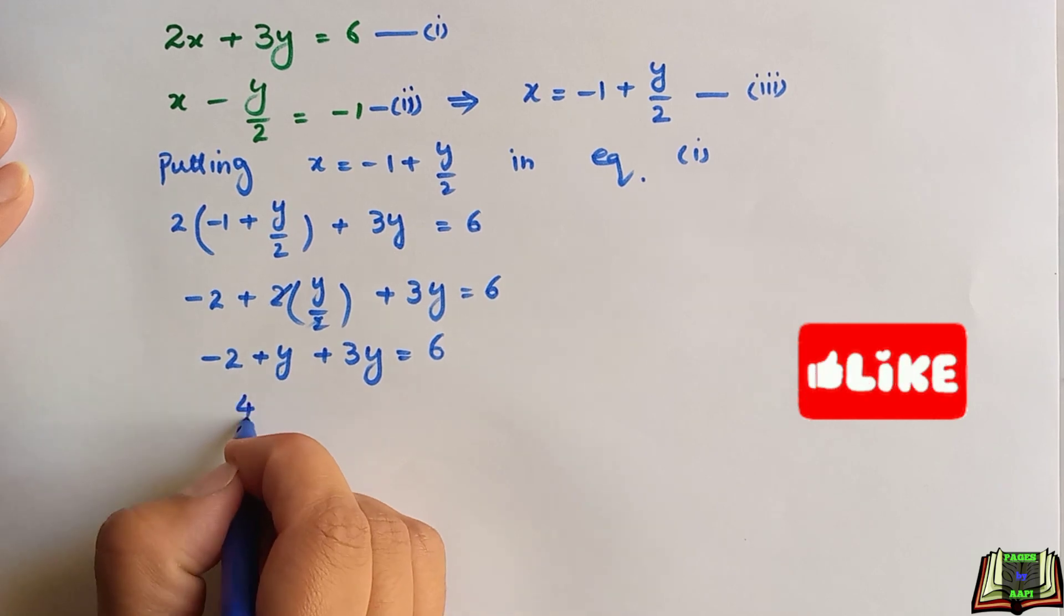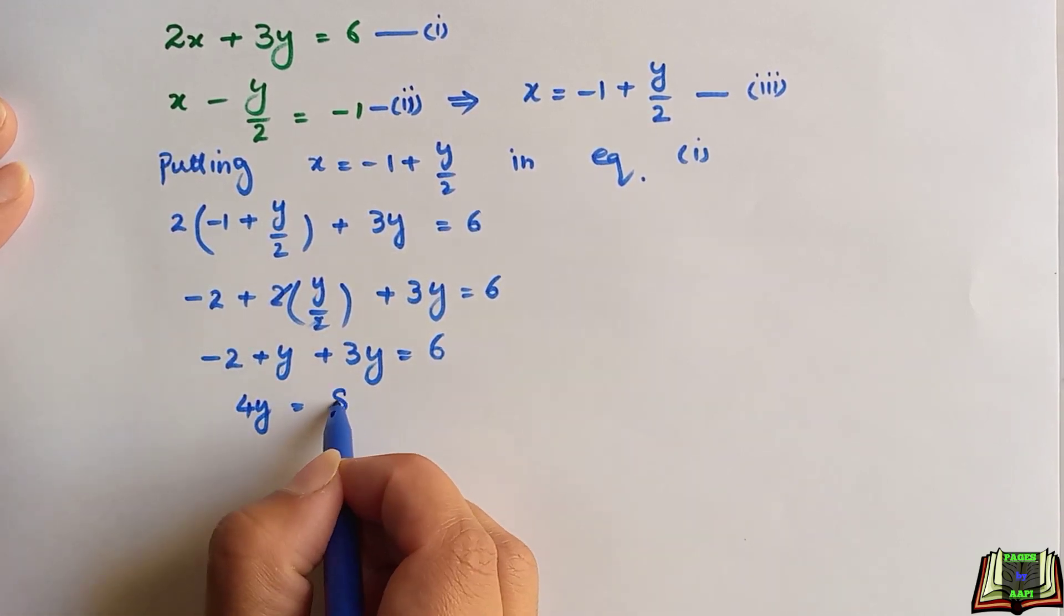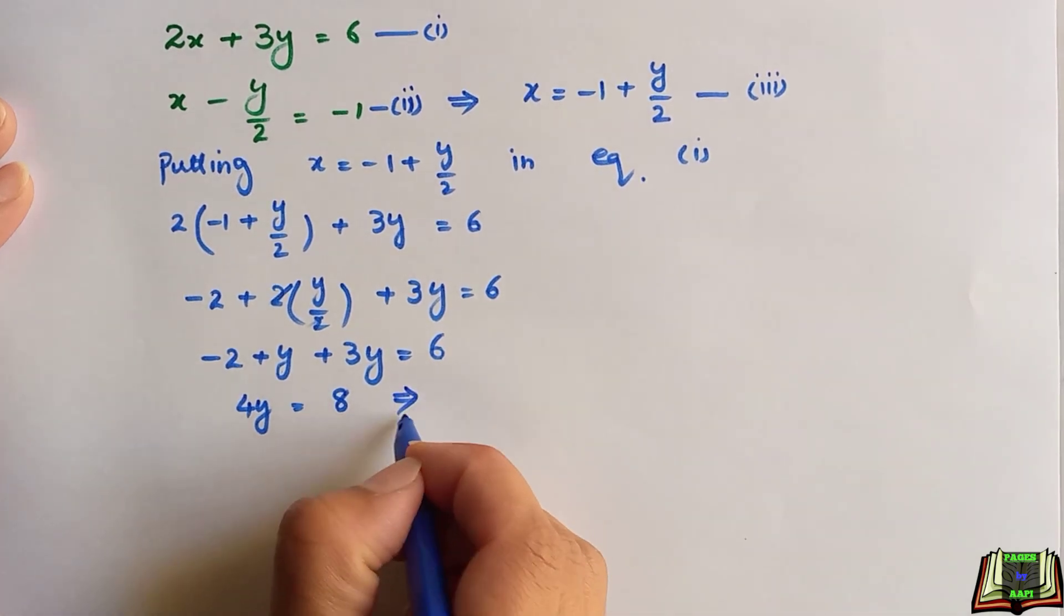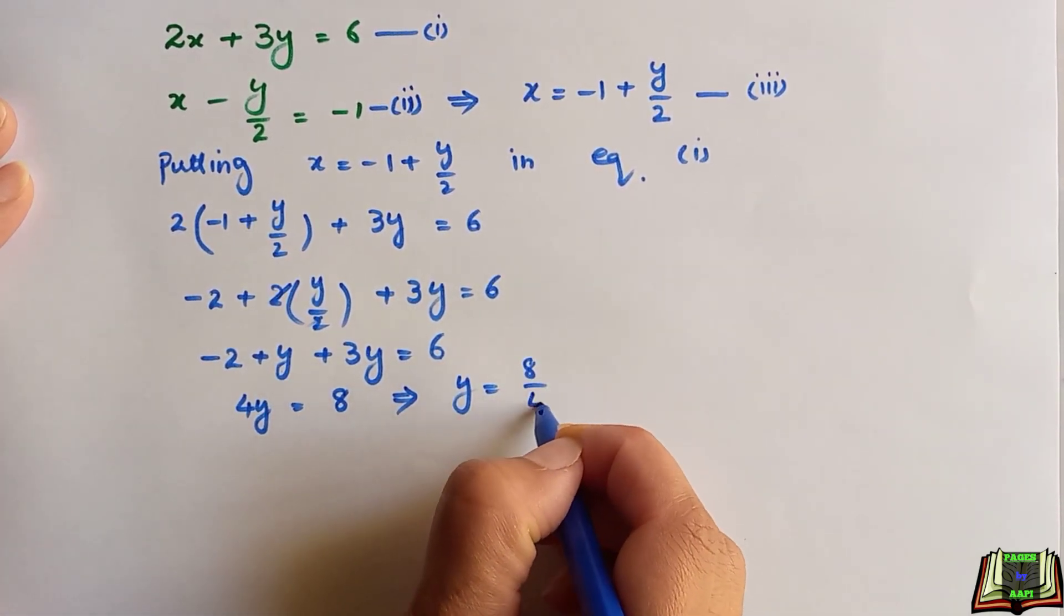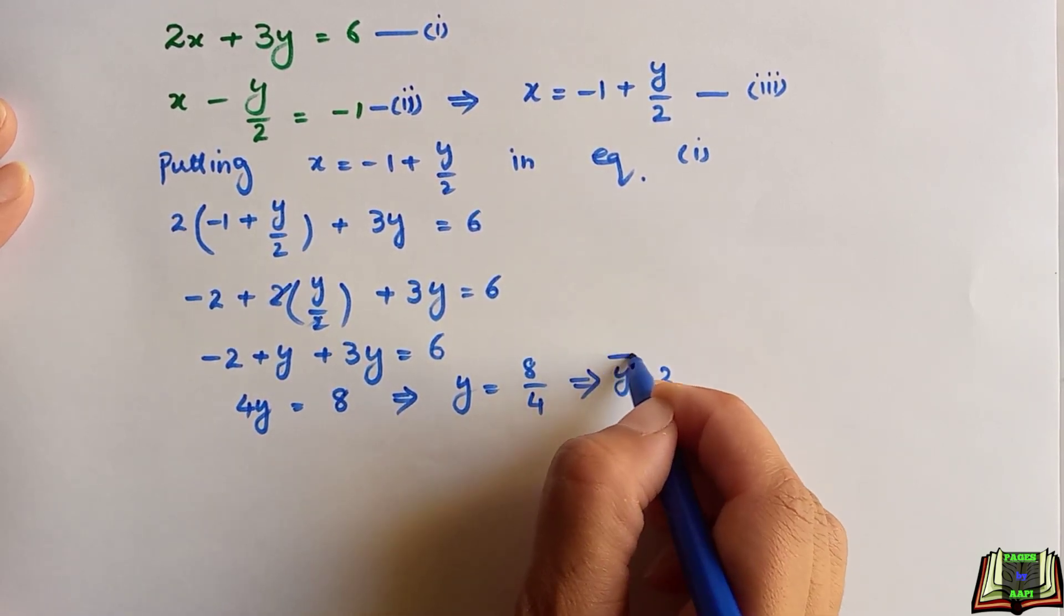3 and 1 is 4. 4y is equal to 6, and this will be added there: 8. From there we will divide 8 by 4, so we get y = 2.